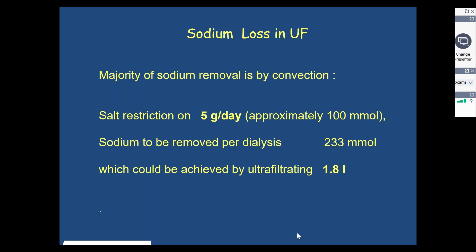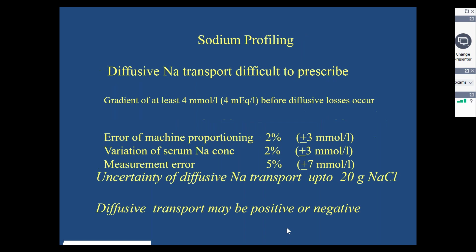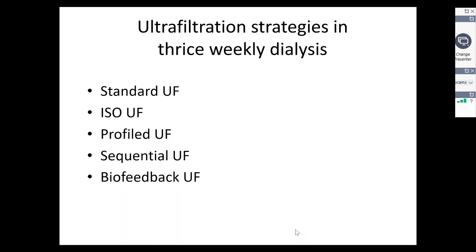Loss of sodium is also an effective strategy. During ultrafiltration, which is an isotonic filtrate of plasma, you tend to remove salt and water both. A typical dialysis would remove approximately 233 millimoles for a 1.8 liter ultrafiltrate, which may not be sufficient. You can change the dialysis sodium setting to induce further diffusive transfer of sodium. However, this strategy is not widely recommended because it is very difficult to prescribe accurate diffusive sodium transport due to machine proportioning errors. Whilst you can stabilize a dialysis procedure by increasing sodium in the dialysate, you would risk sodium accumulation over time.